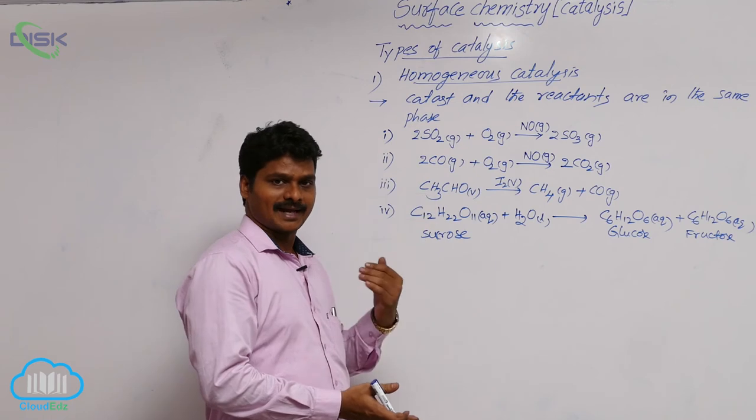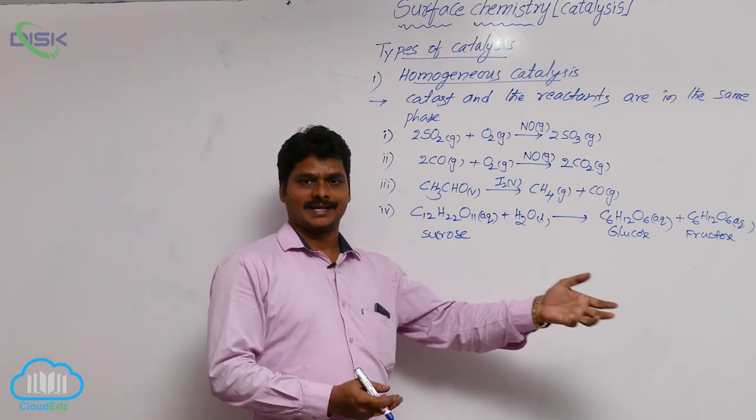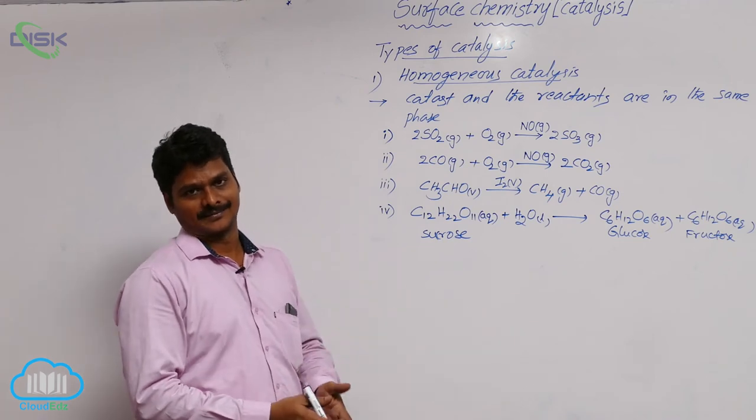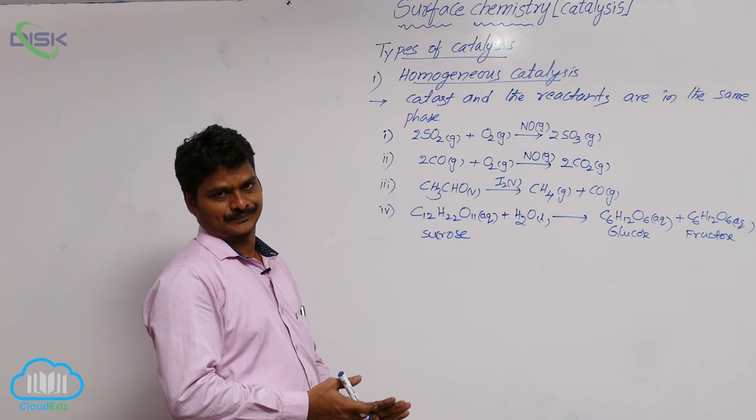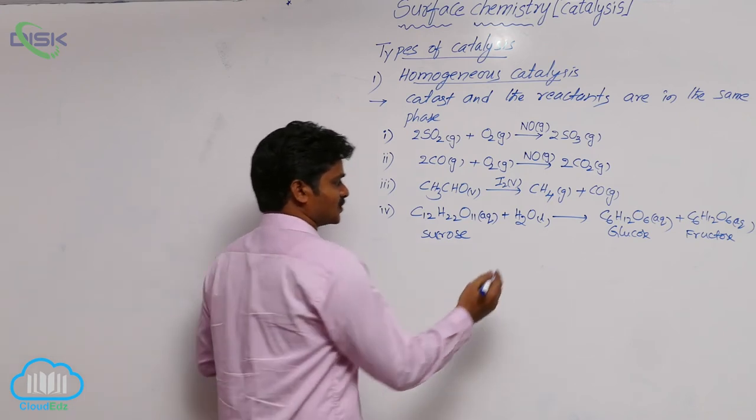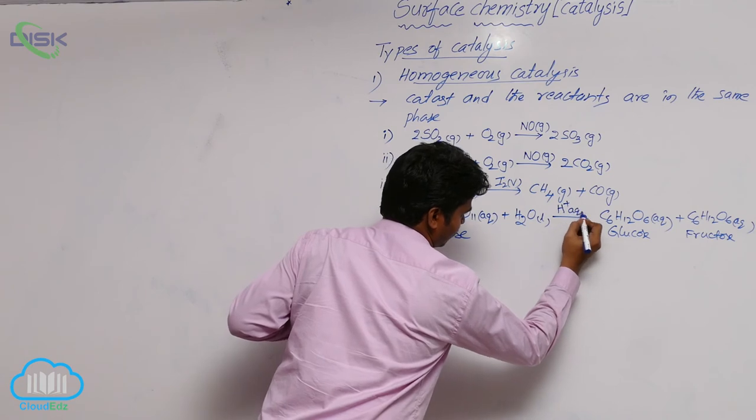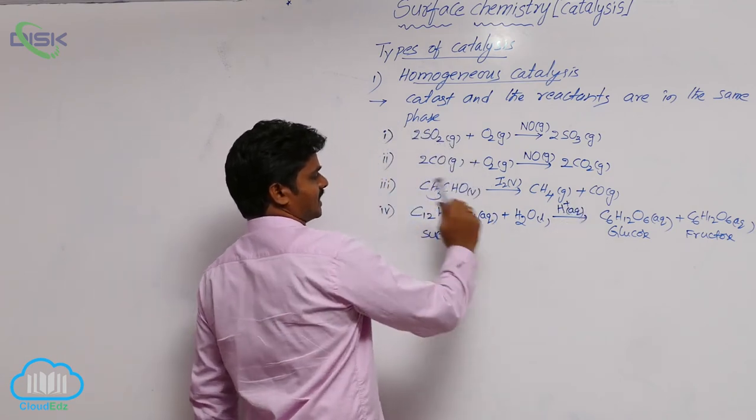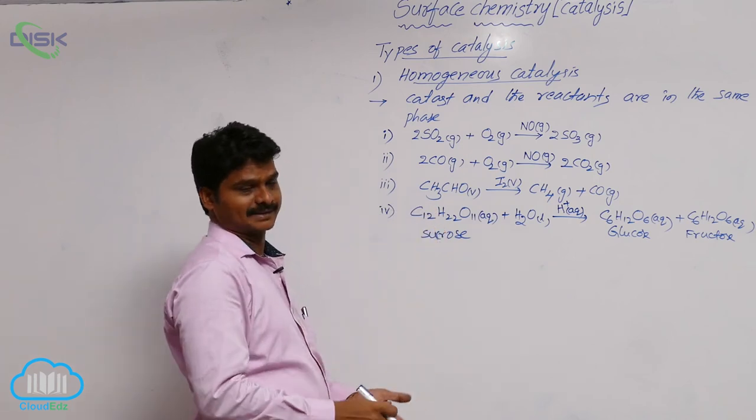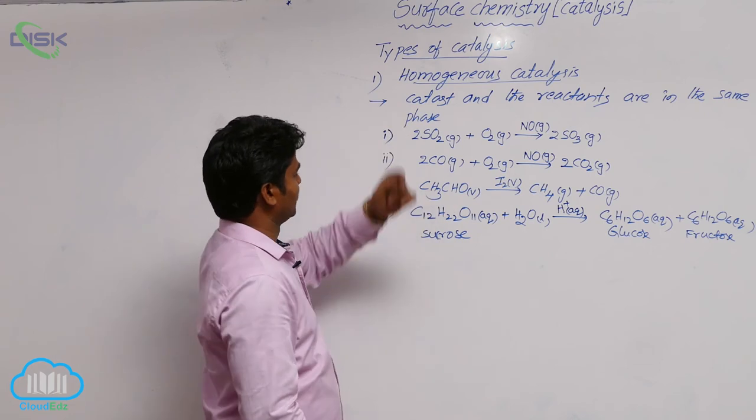That is why the net value is levo. Before reaction dextro, after reaction levo. That is why there is inversion in the rotation angle. So it is said to be inversion of cane sugar. In this, what is the catalyst used? H plus aqua. The acid used and the reactants are in the same phase. That's why it is an example for homogeneous catalysis.